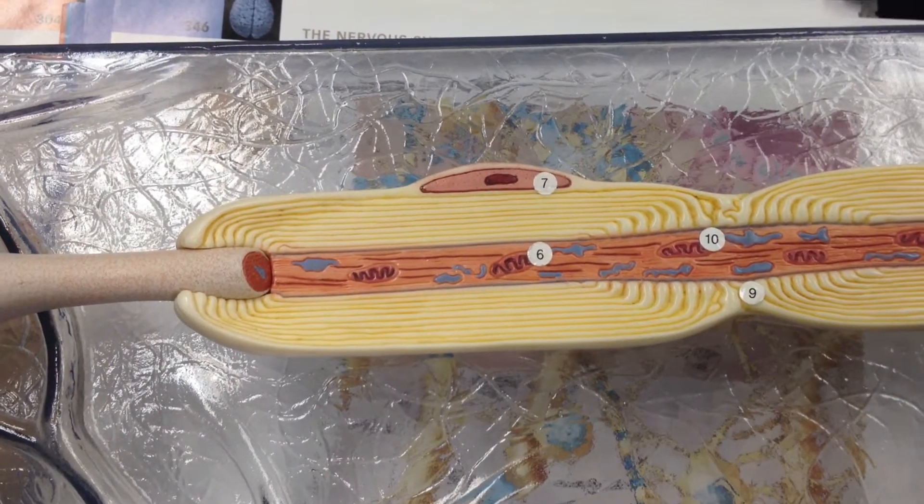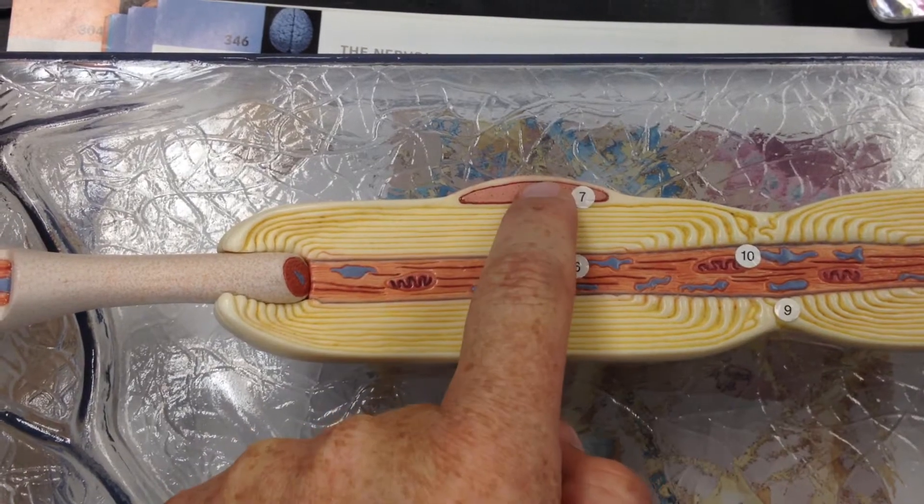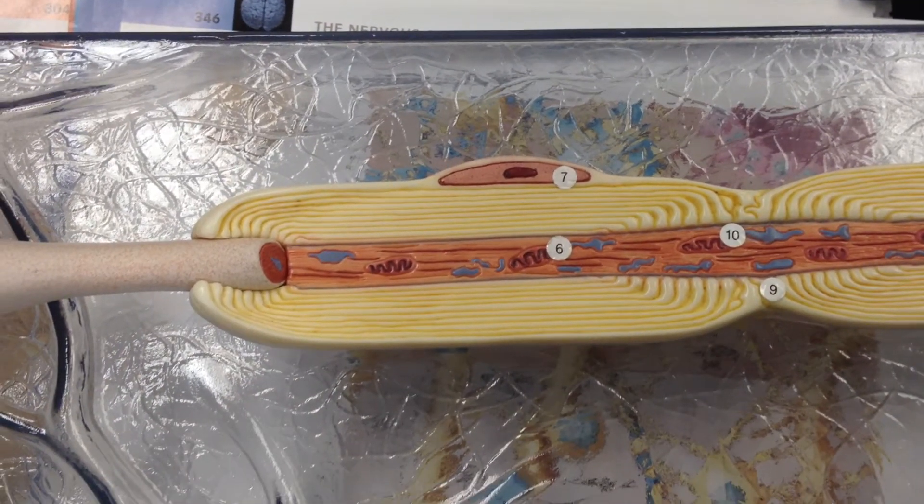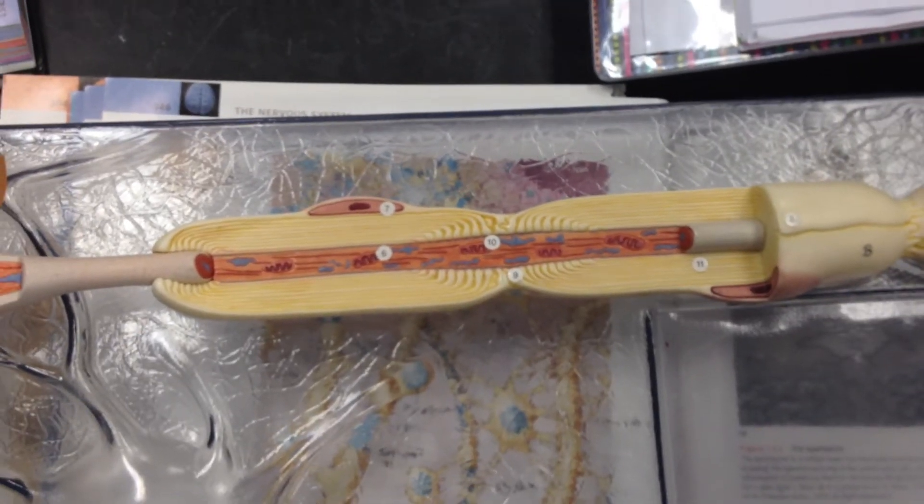The Schwann cell - so this entire thing is a Schwann cell. And that's the nucleus. And then the myelin sheath is the whole thing.